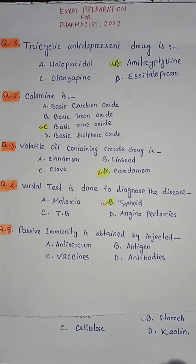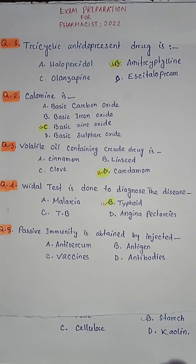Question number five: passive immunity is obtained by injected — option A antiserum, option B antigen, option C vaccine, option D antibodies. So the correct answer is option A antiserum.